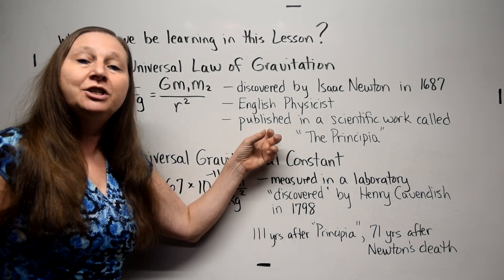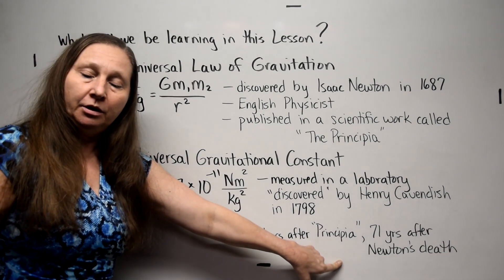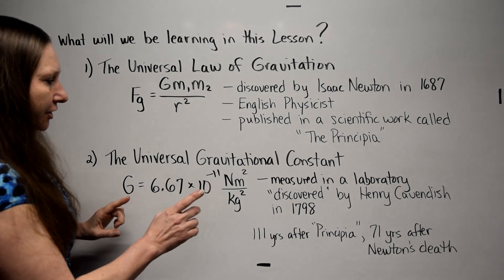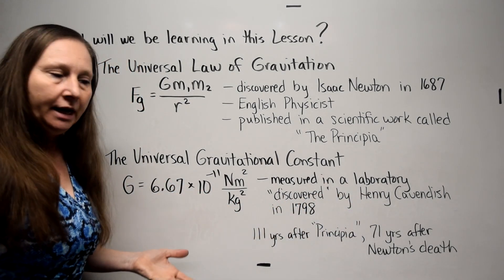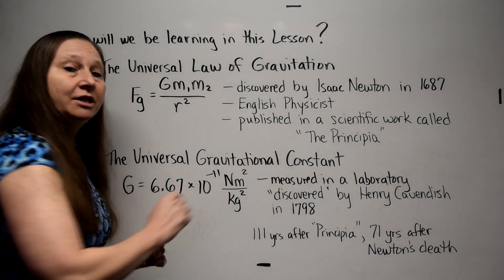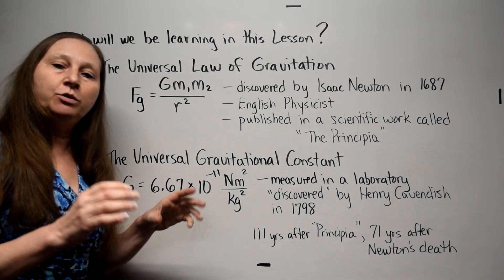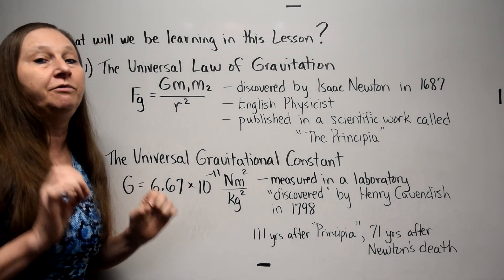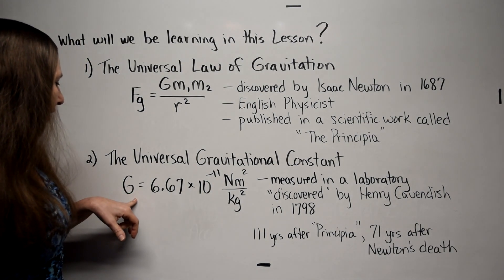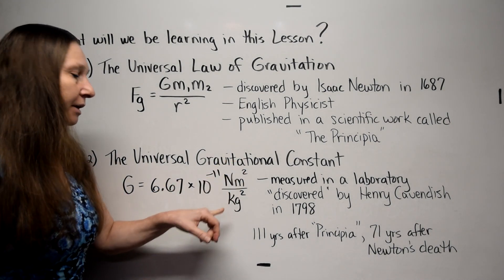111 years after the Principia was published, and 71 years after Newton's death, a physicist named Henry Cavendish — also an Englishman — measured G, the universal gravitational constant, in his laboratory. This man was very humble, very shy, but very precise in the laboratory. He was able to figure out that G is 6.67 times 10 to the negative 11 Newton meter squared per kilogram squared.